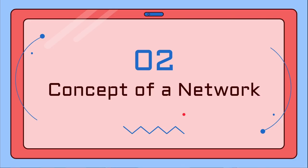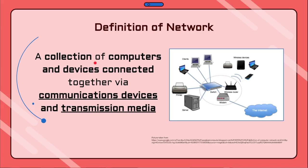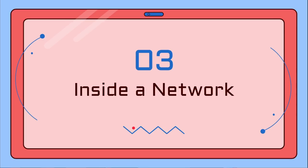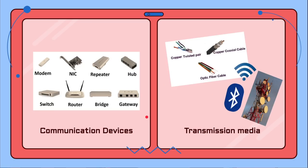Simply put, a network is a collection of computers and devices that are connected together via communication devices and transmission media. From that definition, you will notice that inside a network it must involve communication devices and transmission media.